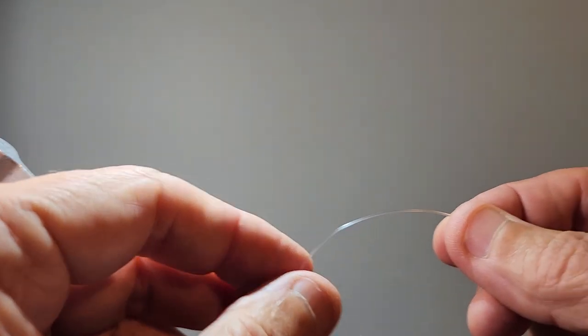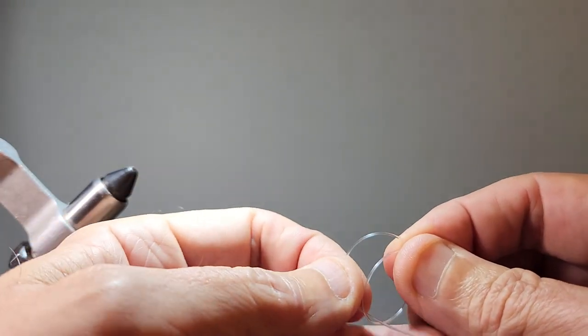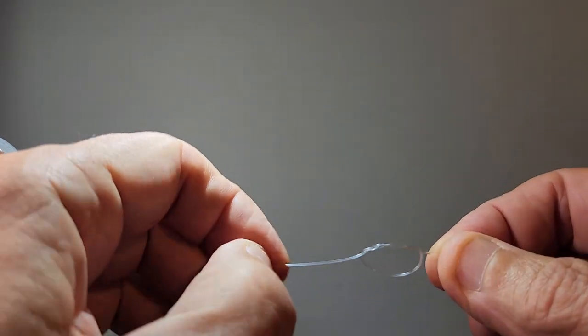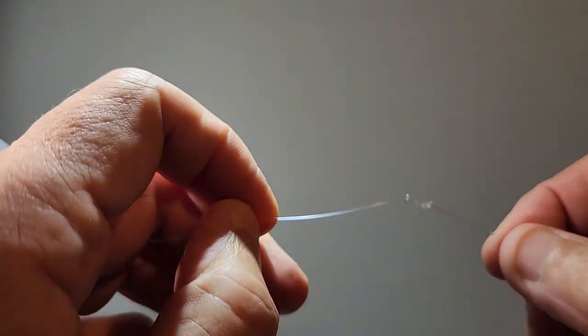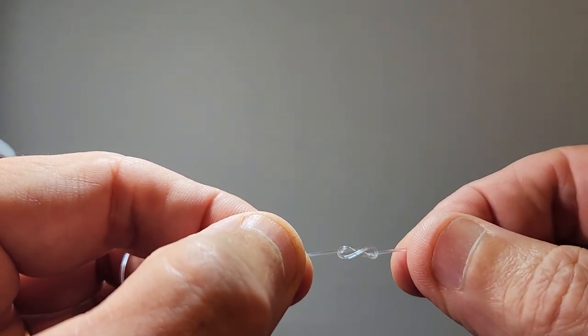The first thing we do is tie a figure eight knot. So just make a loop and go through the loop twice. Once, twice, and then cinch it up but don't pull it real hard and you'll get that nice figure eight. Looks like a beauty.